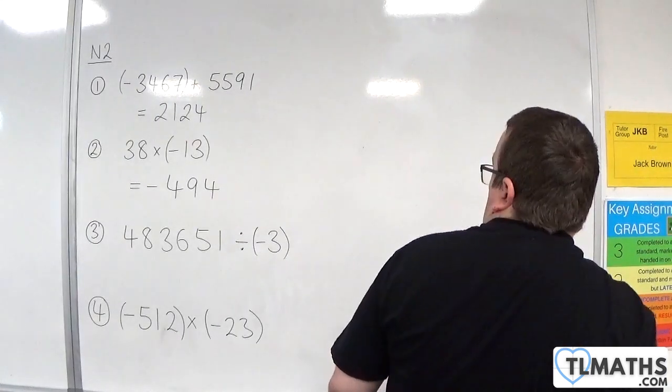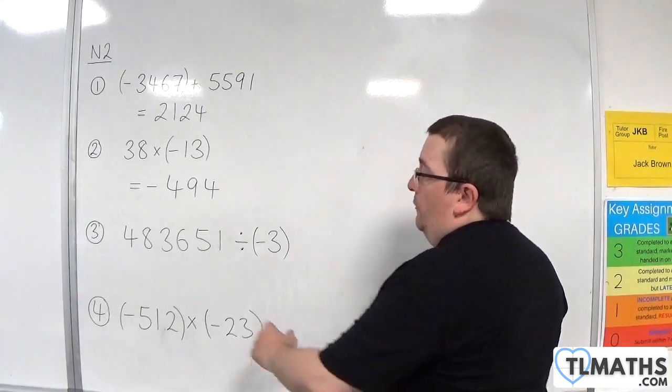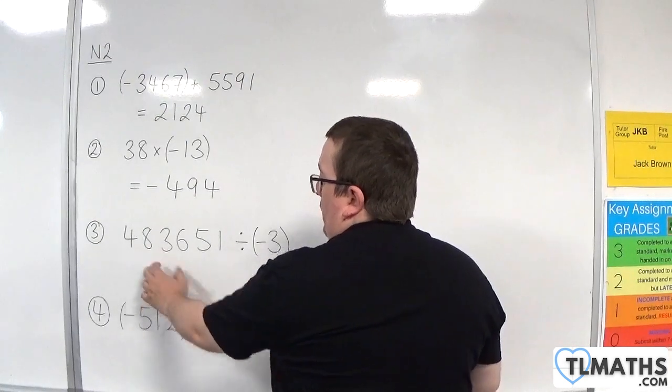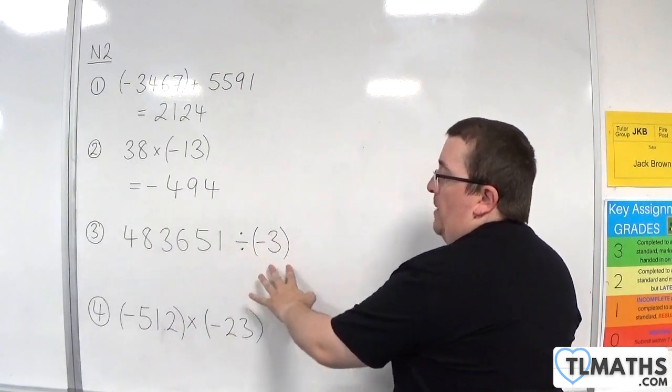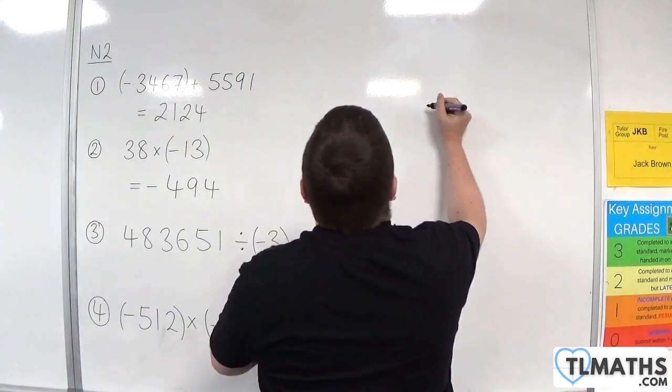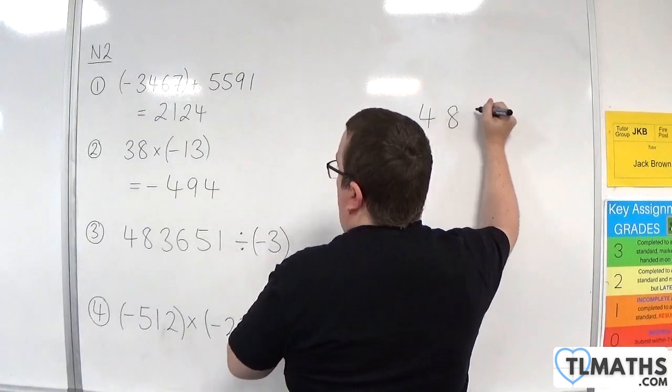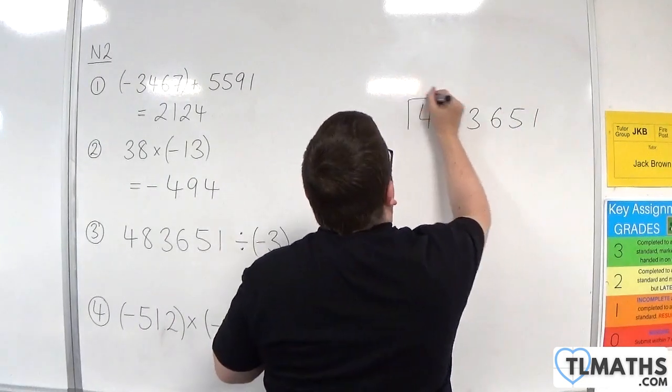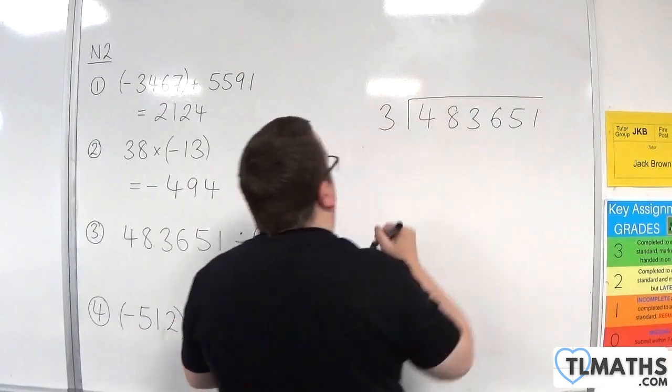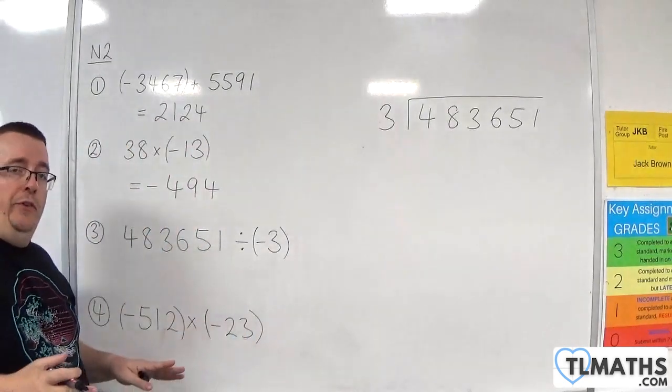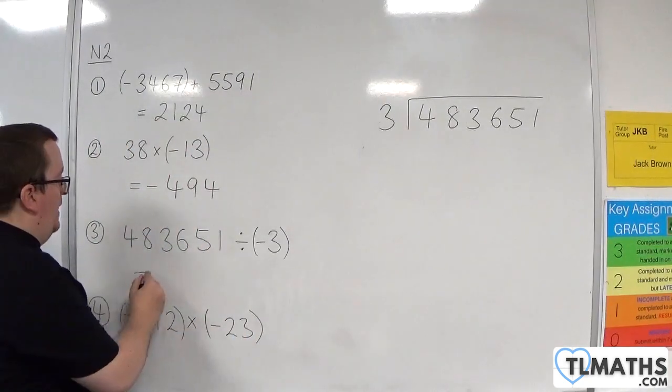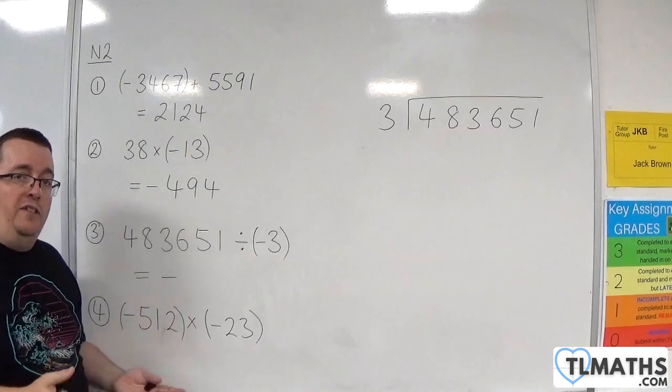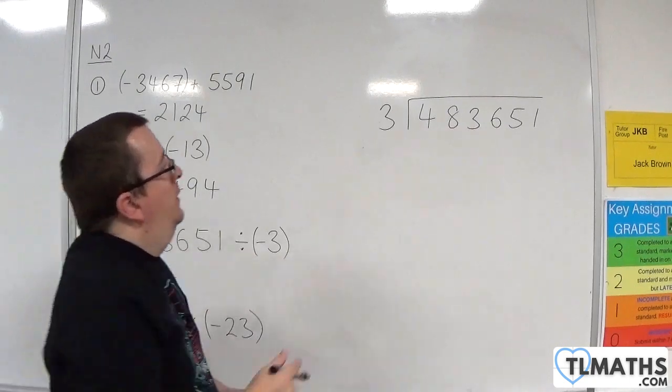Now essentially, it's the same rule for number 3. We have 483,651 divided by minus 3. So what I'll do is 483,651, I'm going to divide that by 3, ignoring the minus sign, and I'll put the minus sign back in at the end because I know the answer is going to be negative.